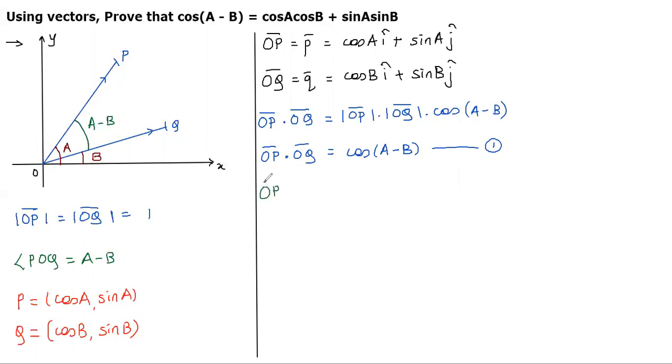Again, I am working on OP dot OQ, but this time, I am solving the dot product between the two vectors. Those vectors we have already written. To get the dot product, we have to multiply i cap with i cap and j cap with j cap.